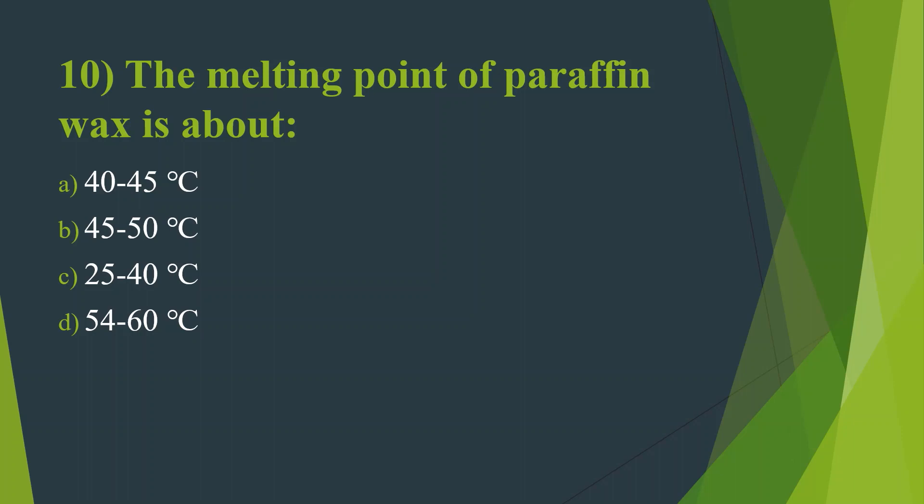Tenth question: The melting point of paraffin wax is about — Option A: 40 to 45 degrees Celsius. Option B: 45 to 50 degrees Celsius. Option C: 25 to 40 degrees Celsius. Option D: 54 to 60 degrees Celsius.